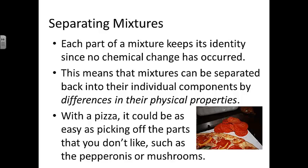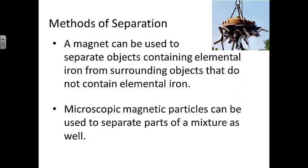Mixing is purely a physical change, which means that mixtures can be separated back into their individual components by differences in their physical properties. With a pizza, it might be as easy as just picking off the parts you don't like — such as pulling off the pepperonis or picking off the mushrooms. A magnet can be used to separate objects that contain elemental iron from surrounding objects that do not, because iron is attracted to the magnet.